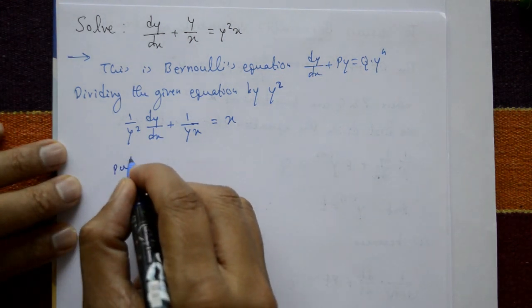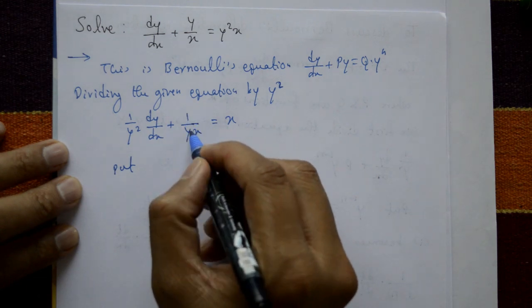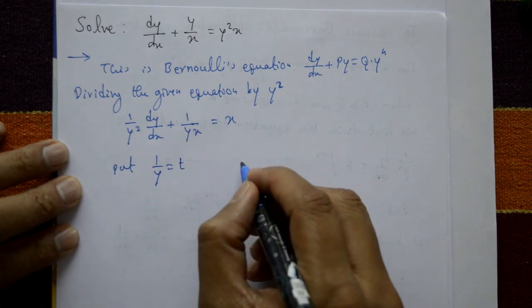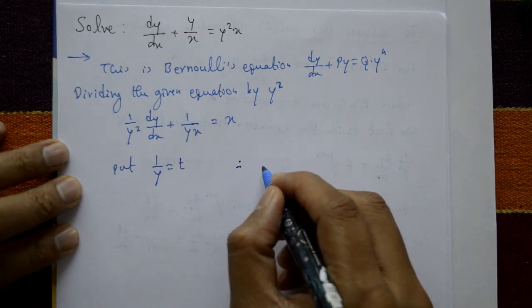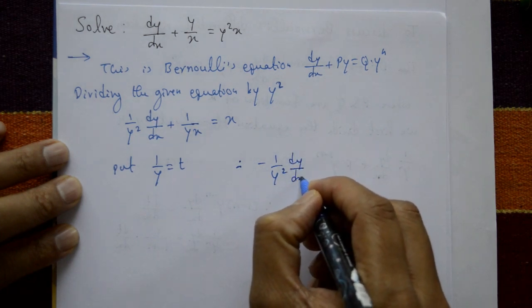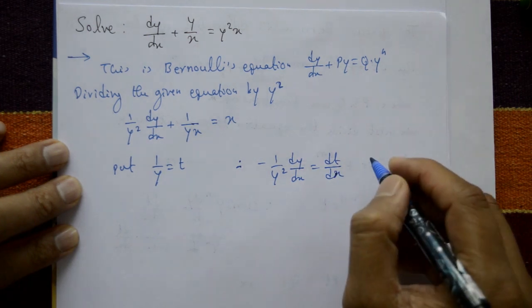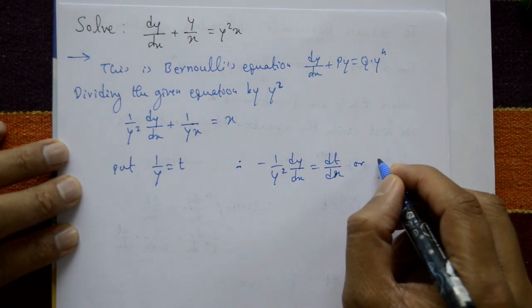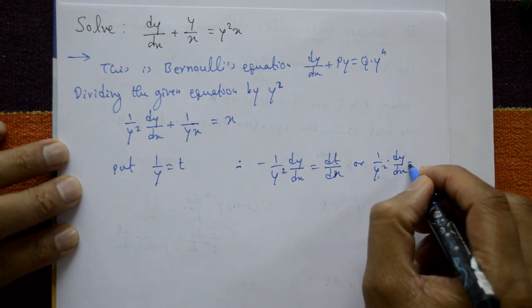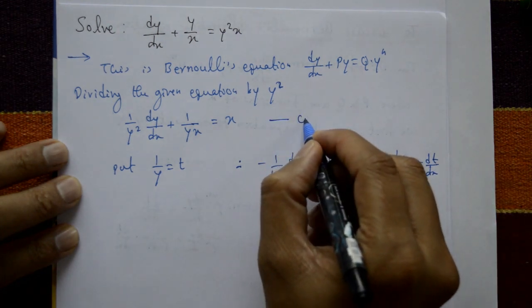Now put 1/y = t. Differentiate: d/dx(1/y) = -1/y²·dy/dx = dt/dx. Or (1/y²)·dy/dx = -dt/dx. Call this equation number 1.